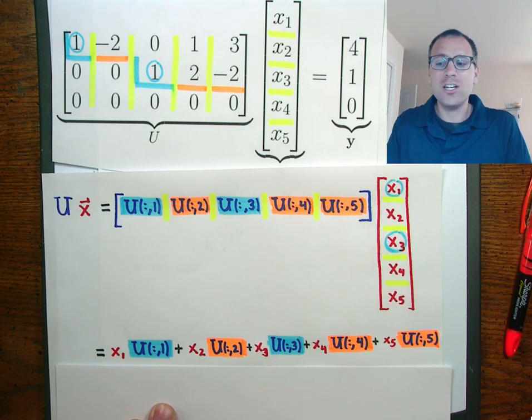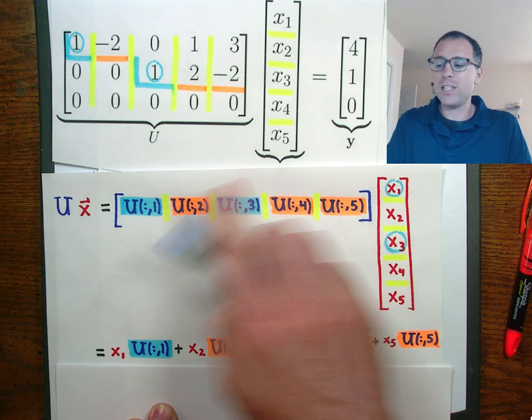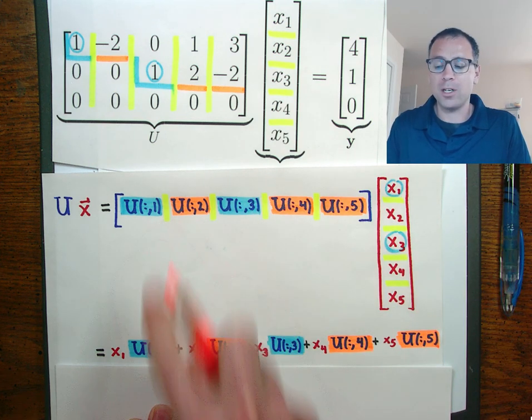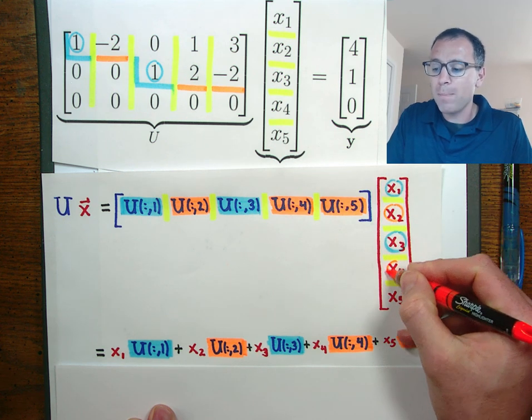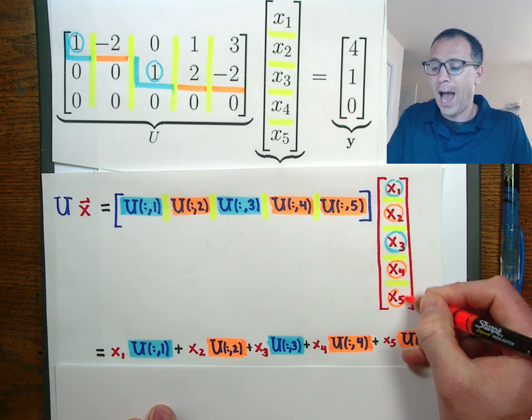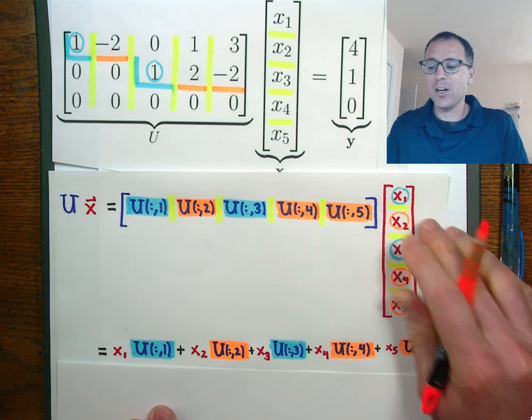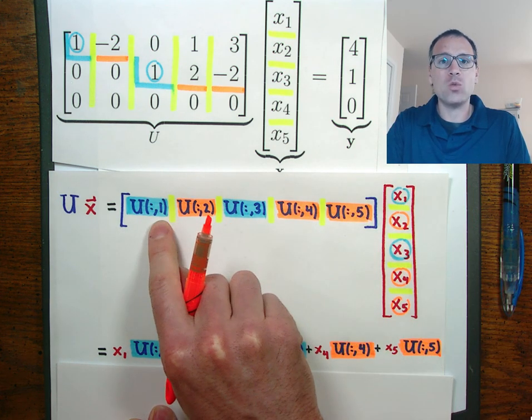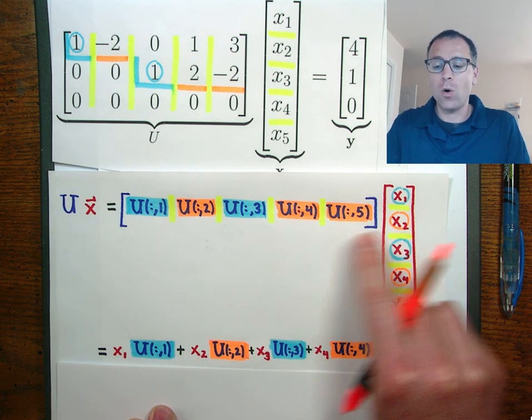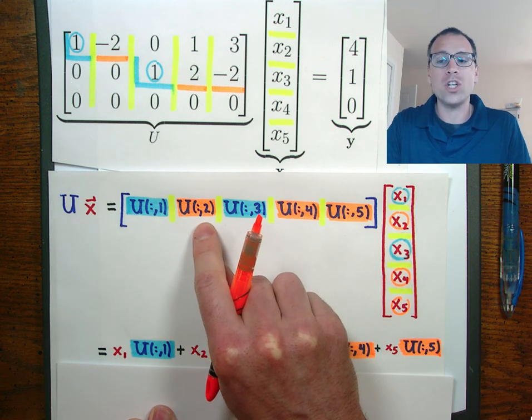We can start to make this direct translation between variables that get mapped to pivot columns of u and then variables that get mapped to non-pivot columns of u. In fact we've done that here: x1 we've highlighted in blue because it matches with a blue pivot variable, x2 in orange because it matches with an orange non-pivot variable.